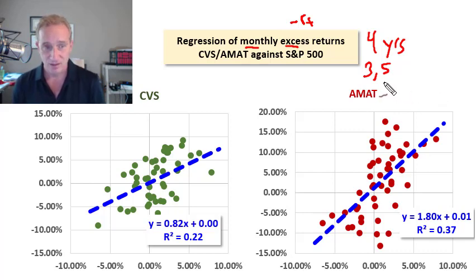But the longer that window, the further back in time we're going. And in theory, the more distant those data points are, the less relevant they may be. So there's a trade-off there between sample size and relevance. So I've got four years of monthly excess returns for CVS and Applied Materials.